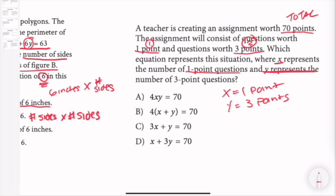I know that the total assignment is worth 70 points, so I know that this has to equal 70 points. Now, if it's one point, we can just leave it as x.